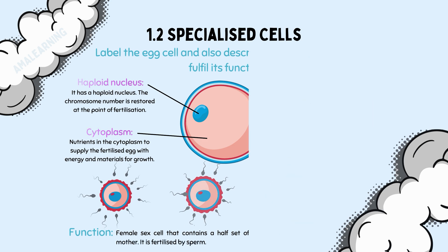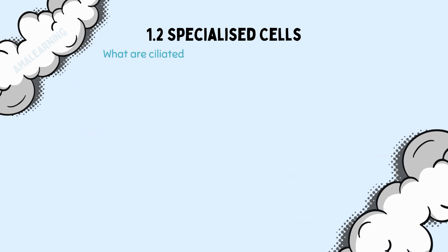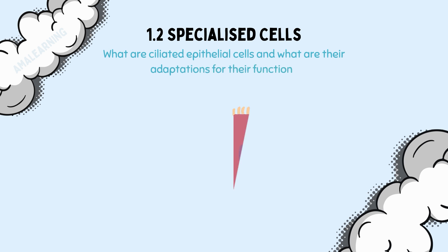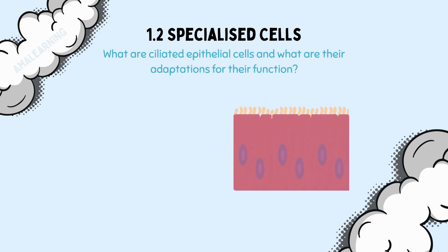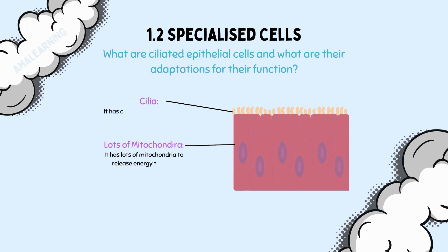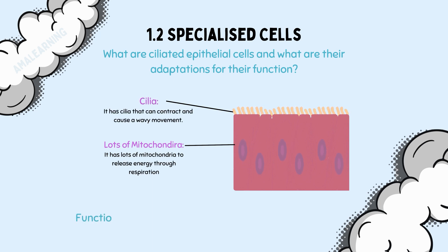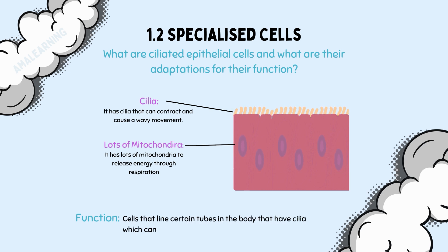Exam questions linked to ciliated epithelial cells usually focus on the fact that they have lots of mitochondria, which provide the required energy for the cilia to contract and cause a wavy movement. In the trachea, the cilia contract to form a wavy movement, which in turn moves the mucus up the trachea. The many mitochondria provide the energy needed for the cilia to contract.